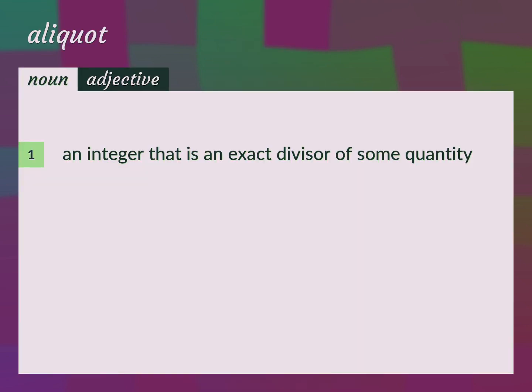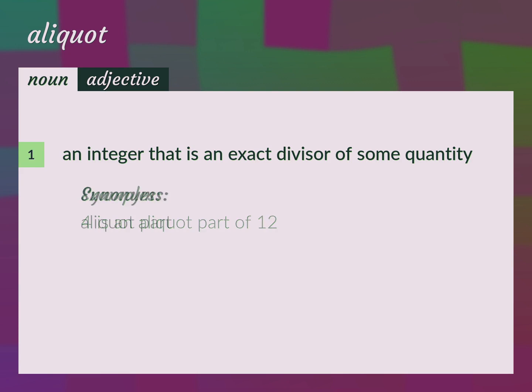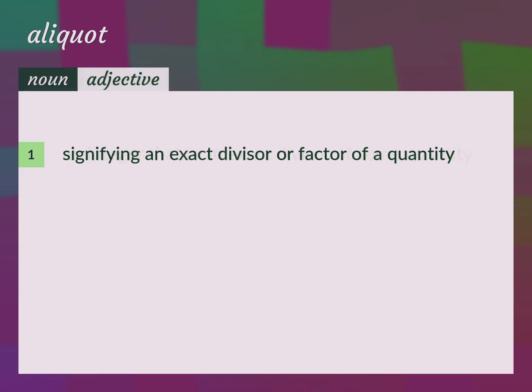Aliquot part: an integer that is an exact divisor of some quantity, signifying an exact divisor or factor of a quantity. For example, four is an aliquot part of twelve.